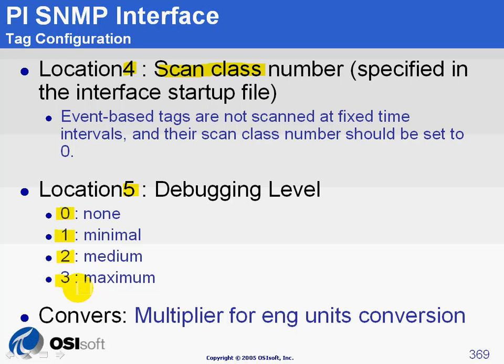The last attribute I'd like to talk about is Converse, which is a simple number to multiply the value you got from the agent before archiving it into PI. A good example would be to convert bytes into kilobytes or megabytes.